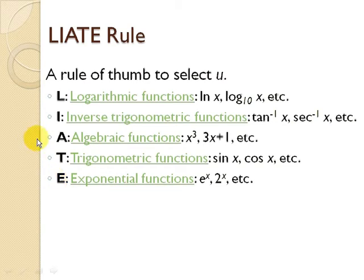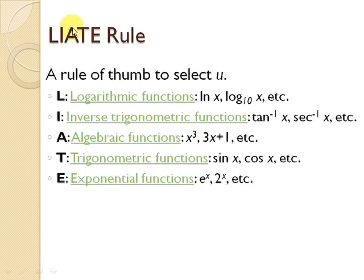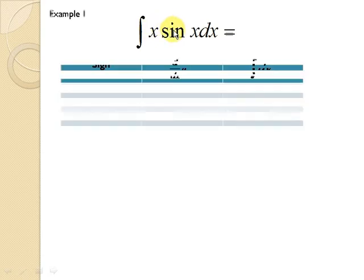This is noted as LIATE, where A is actually algebraic function. So if we look at this first example, we have x sin x. X is actually an algebraic function, and sin x is a trigonometric function. If we follow the LIATE rules, the x is the algebraic function and sin x is the trigonometric function. So we will select U as the algebraic function, that is x, and then our dV will be sin x.